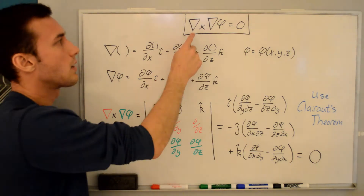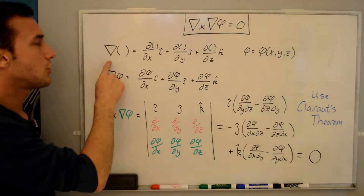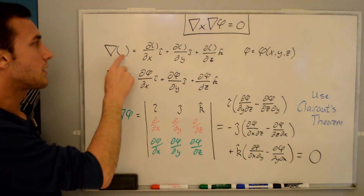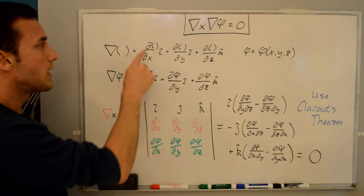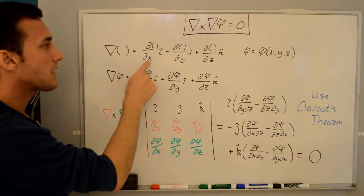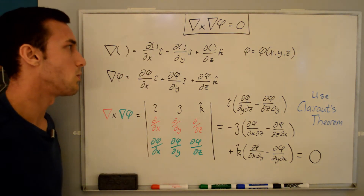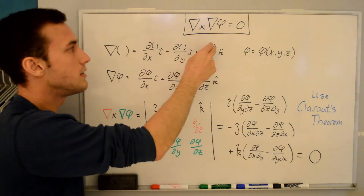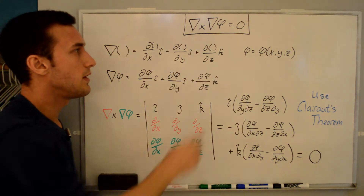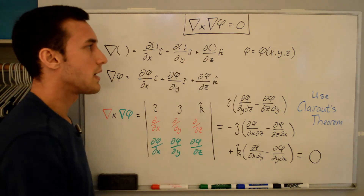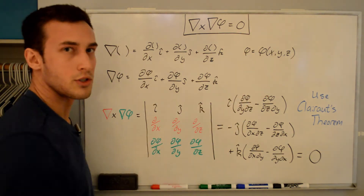So let's start by first defining what del is and what del phi is. Del is just an operator — it acts on something; it could be a scalar, a vector, etc. So we have d/dx in the i-direction, plus d/dy in the j-direction, plus d/dz in the k-direction. And phi we're defining as a scalar, so it can be a function of position x, y, or z.